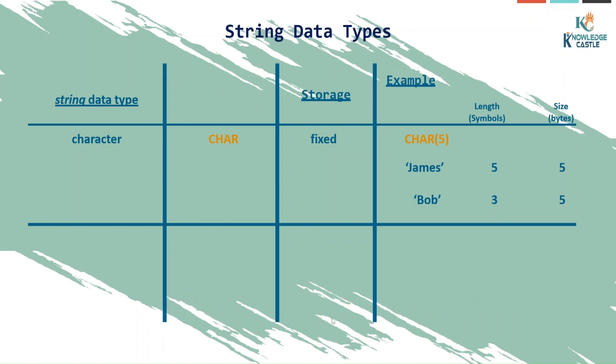Now to fix that, there is one more character type which is variable character. And to write it, we write it VARCHAR. In this, the storage is variable. If I'm writing VARCHAR five and now if I'm storing James, length is five, size is also five. But now if I'm storing Bob, length is three, the size will also be three.